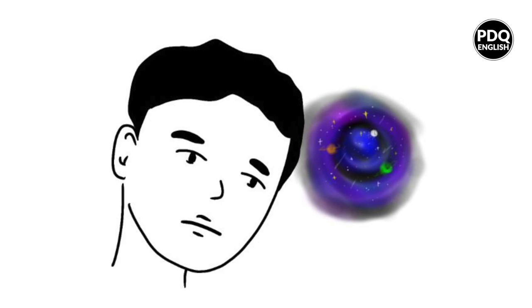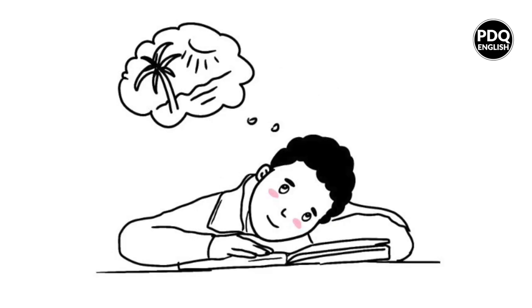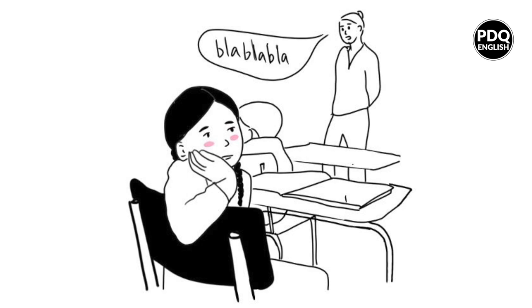Space out is a fun phrase that means to become distracted or lost in your thoughts, often to the point where you're not paying attention to what's happening around you. It's like your mind takes a little vacation to outer space, leaving your body behind on Earth. Sometimes you can space out because you're too tired to focus on something or when you're daydreaming about something else. This often happens when you're in class, your teacher is talking about something, but you are not paying attention. You are thinking about something else completely. You are spacing out.